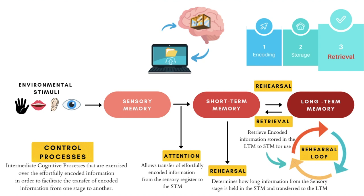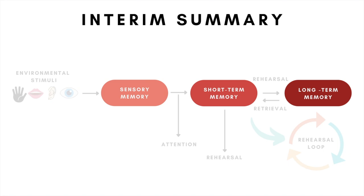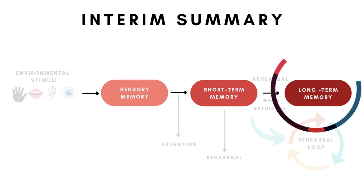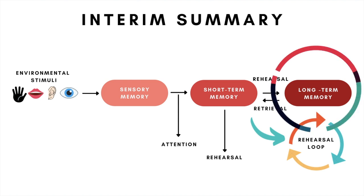Let's look at an interim summary of the model so far. According to the Atkinson and Shiffrin model, information passes through three stages: the sensory memory stage, the short-term memory stage (STM), and the long-term memory stage (LTM). These are all separate locations in which information is stored. Information transfer occurs in a linear and sequential process. The STM serves as the gateway to the LTM, and the various memory stores operate in conjunction via the processes of attention, rehearsal, and retrieval.